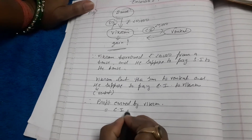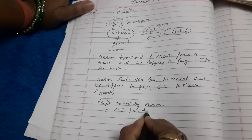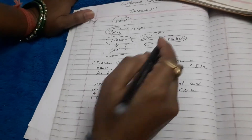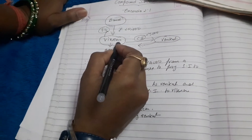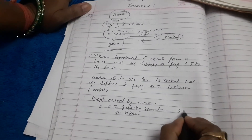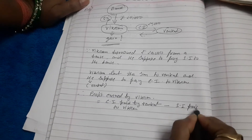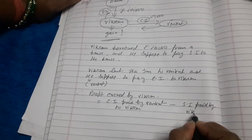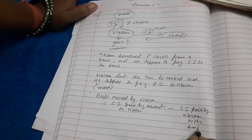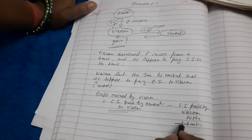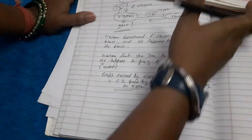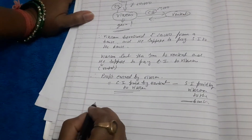The gain earned by Vikram equals the compound interest paid by Venkat to Vikram, minus the simple interest paid by Vikram to the bank. We will solve these two parts — simple interest and compound interest — then subtract to get the profit earned by Vikram.